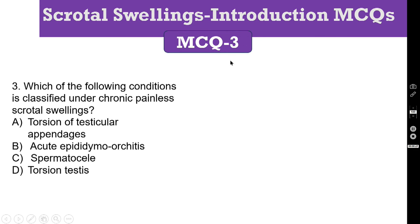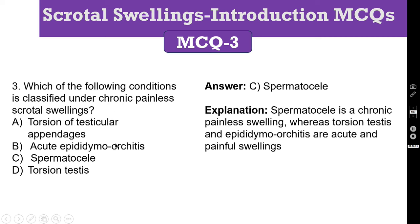MCQ number 3: Which of the following conditions is classified under chronic painless scrotal swellings? We have already discussed this. Naturally, Spermatocele is the correct answer. Spermatocele is a chronic painless swelling, whereas Torsion Testis, Acute Epididymo-orchitis, and Torsion of Testicular Appendages are all acute painful swellings.